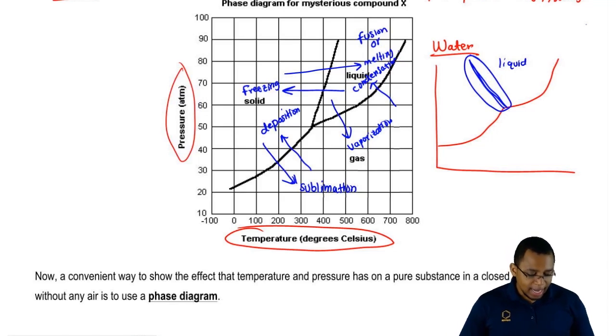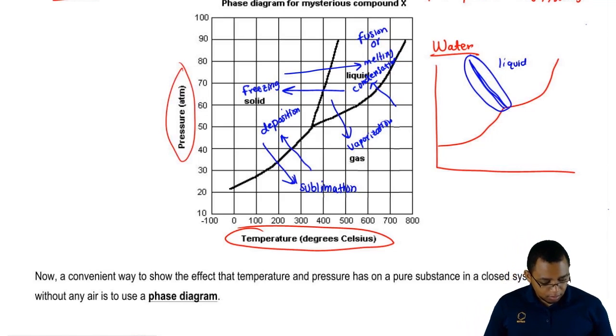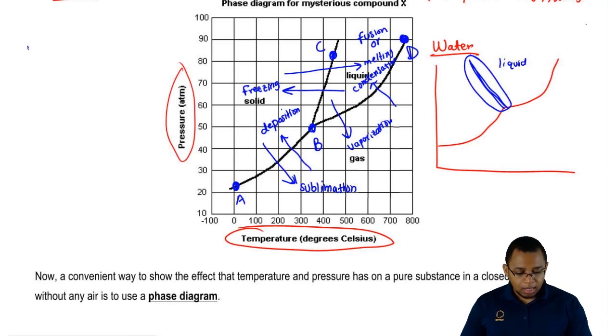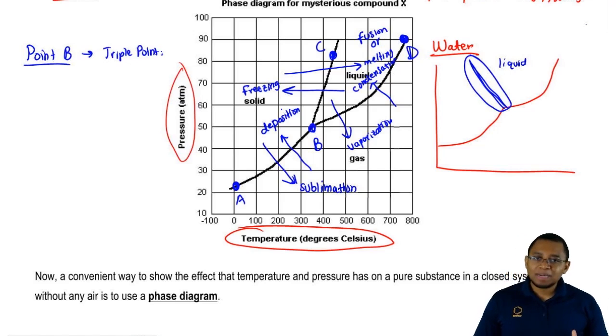Let's say that this is point A, point B, point C, point D. At point B, we have something called the triple point. At the triple point, the substance exists in all three phases. At that point, it exists as a liquid, a solid, and a gas all at once, the triple point.